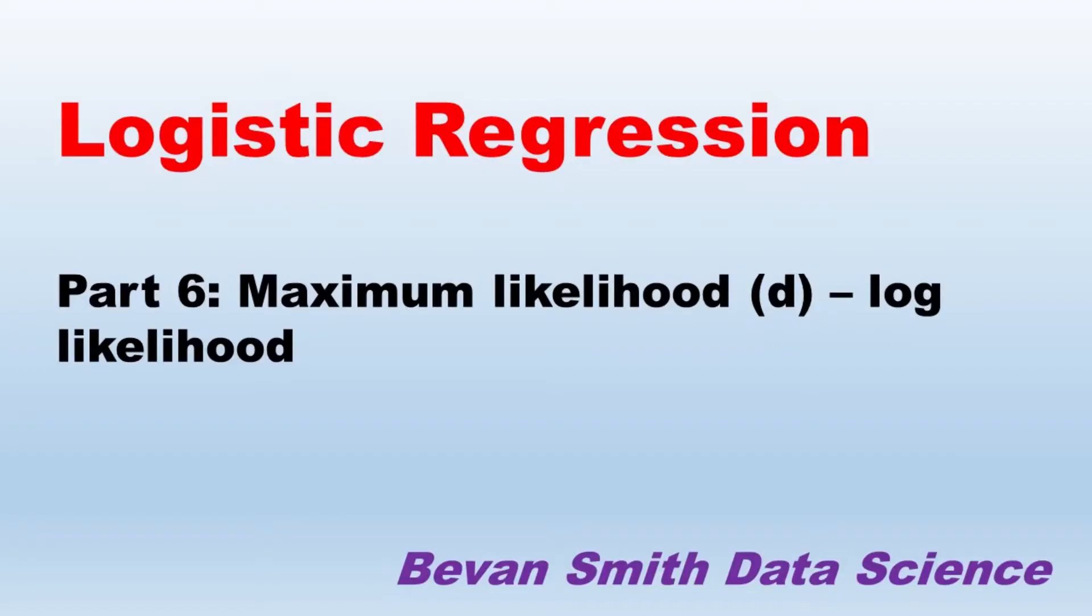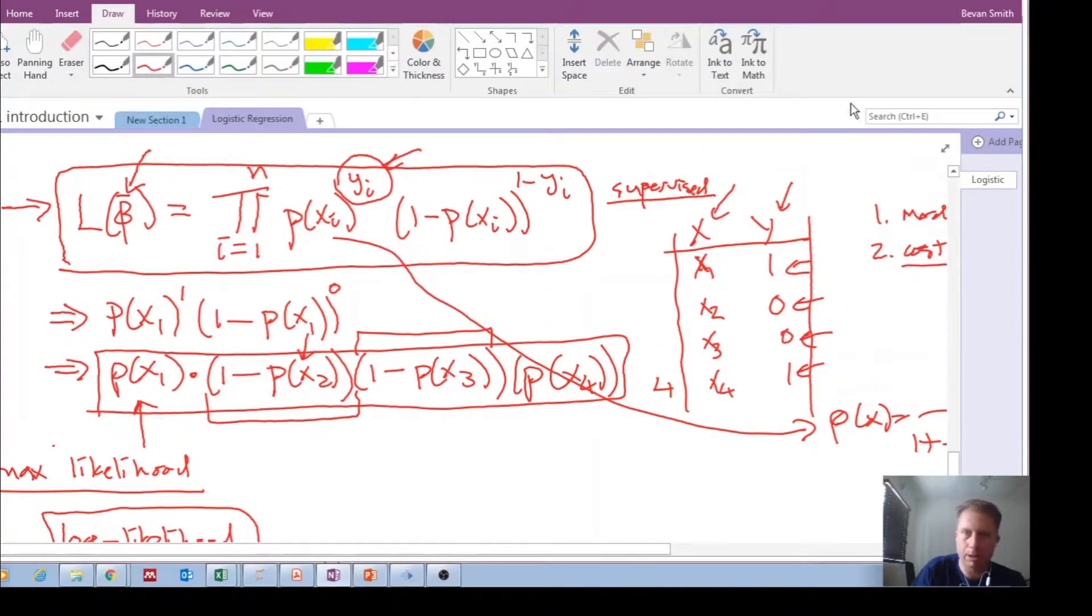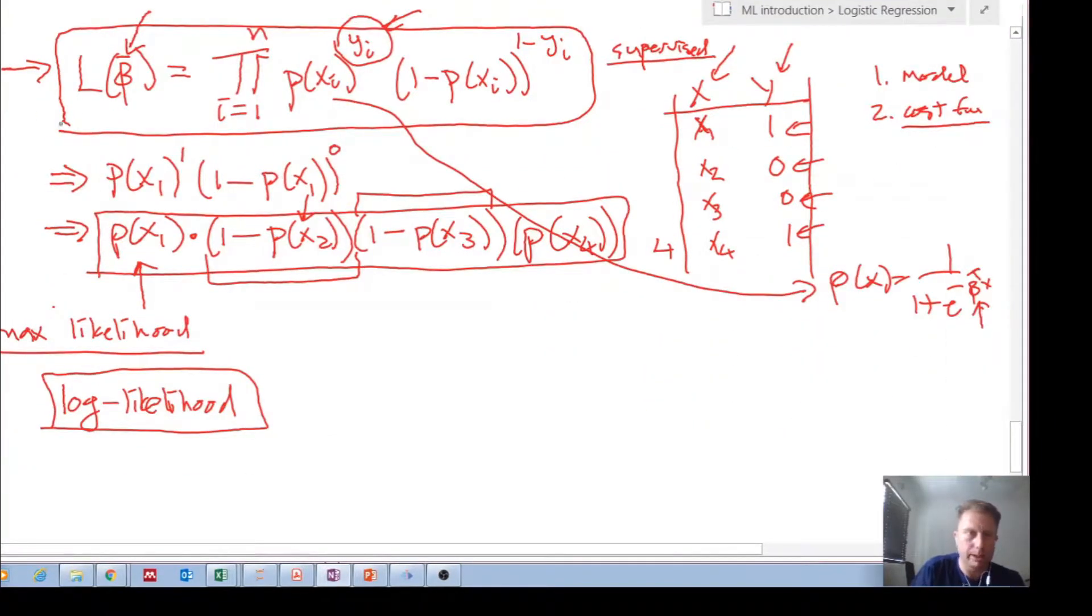Okay, welcome back. We're continuing with trying to understand how maximum likelihood works in terms of finding the optimal parameters for a logistic regression function. In the previous video we ended up over here, we saw what the likelihood function is. It's this pi times the probability of xi to the power of yi multiplied by one minus the probability of xi to the power of one minus yi.